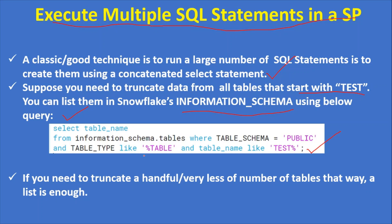You can list all tables starting with 'test' where the schema name is 'public'. Note that to query information_schema you need to set the current database, otherwise you'll get an error. Alternatively, you can provide the fully qualified name as database_name.schema_name, in which case you don't need to set the current database in your session.